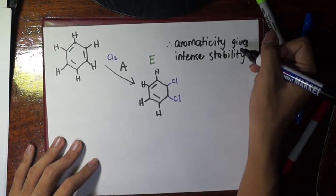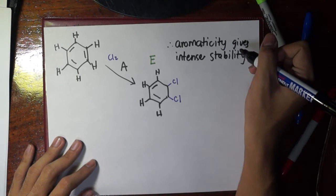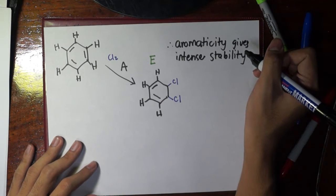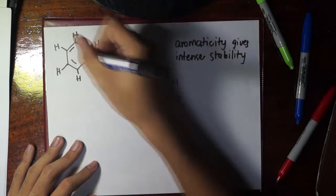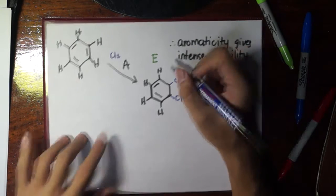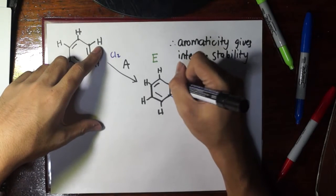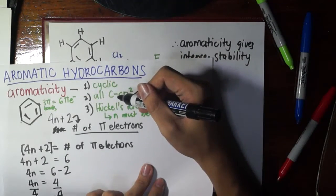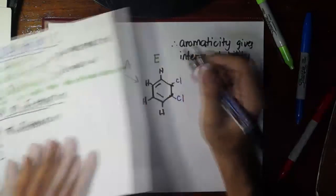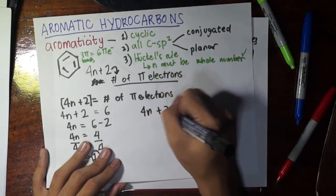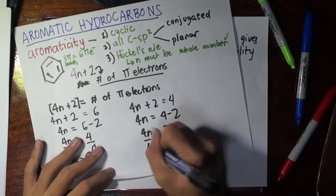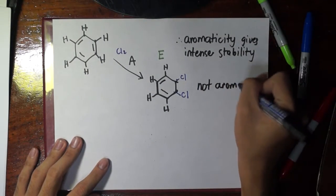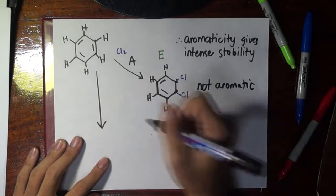However, the issue is that aromaticity gives intense stability to the ring. Compounds prefer stability, so benzene will not spend energy becoming unstable. The moment you remove a double bond, those two carbons become sp3, violating the sp2 requirement. You also violate Hückel's rule: with four pi electrons, 4n + 2 = 4 gives n = 1/2, which is not a whole number. So addition is not something benzene would favor.